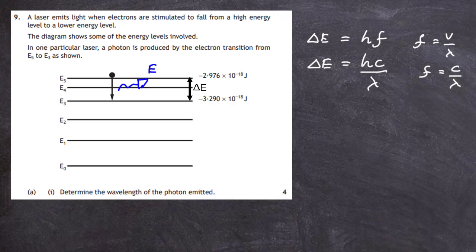Now we can rearrange to find what the wavelength is. If we cross multiply, we have delta E times lambda equals HC. Therefore, lambda on its own equals HC all divided by delta E. We've just got to find this delta E value.